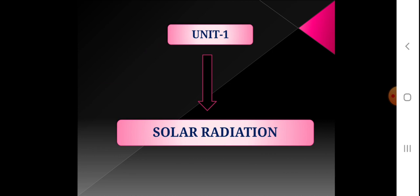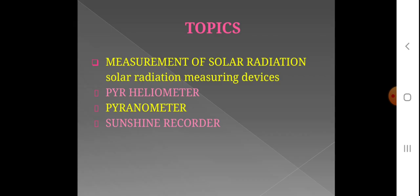I have completed two videos in Unit 1, titled Solar Radiation. This is video number 3, lecture number 3. In the last video, I explained about solar radiation measuring devices — one of those devices being the pyroheliometer. In this video, I will explain about another solar radiation measuring device: the pyranometer.